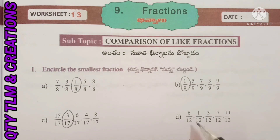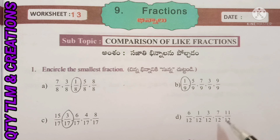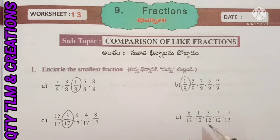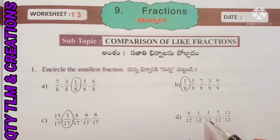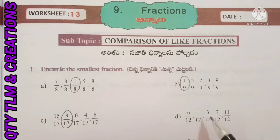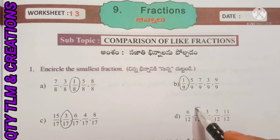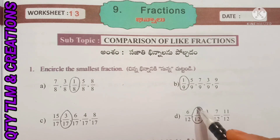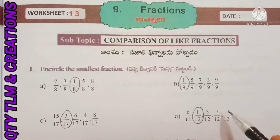Next, D: 6 by 12, 6 by 12, 6 by 12, 7 by 12, 7 by 12, 11 by 12. Here also, which fraction has the smallest numerator? 1. So 1 by 12 is the smallest fraction here.